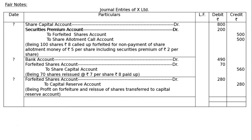Next entry: Forfeited Shares account debited, to Capital Reserve account, that is Rs.280 in both debit and credit columns. Total debit Rs.940 and this is the final answer.